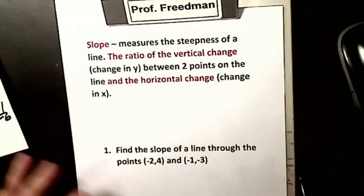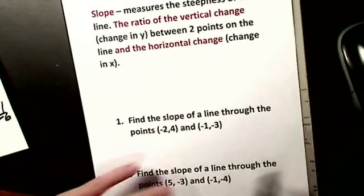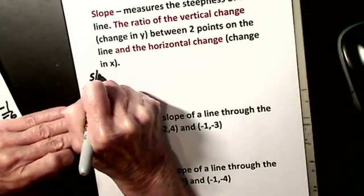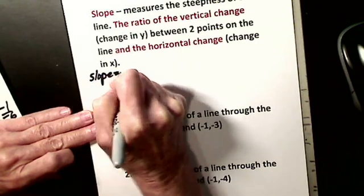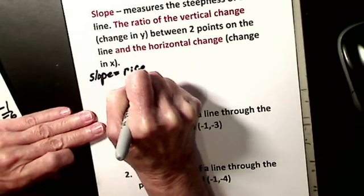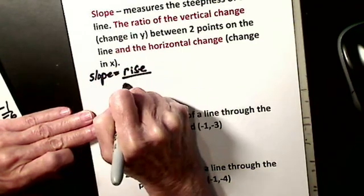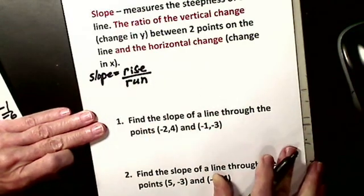So if I had to write a formula for slope, slope equals—we call it the rise, which is the change in y, over the run, which is the change in x.